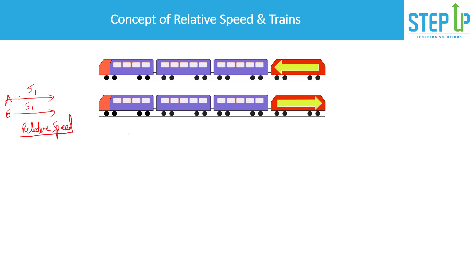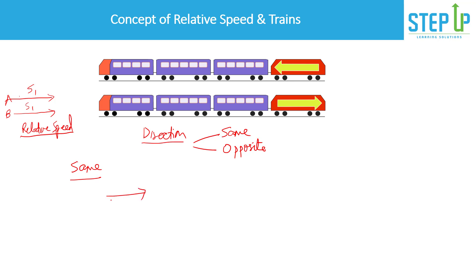On this same concept, a lot of questions on trains, cars, etc. will appear. In relative speed, direction matters. There are two cases: same direction and opposite direction. In the same direction, if object A is moving at speed S_A and object B is moving in the same direction at speed S_B, then the relative speed becomes S_A minus S_B. So in the same direction, speeds subtract.